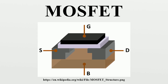The MOSFET is by far the most common transistor in both digital and analog circuits, though the bipolar junction transistor was at one time much more common. The main advantage of a MOSFET over a regular transistor is that it requires very little current to turn on, while delivering a much higher current to a load.